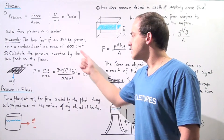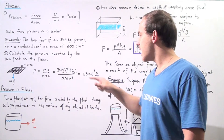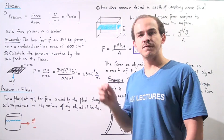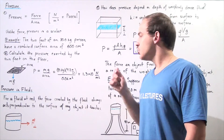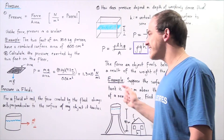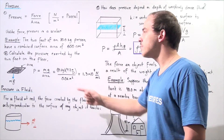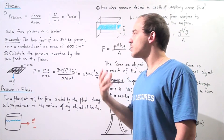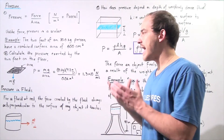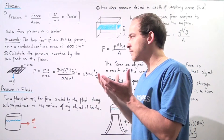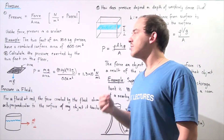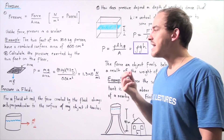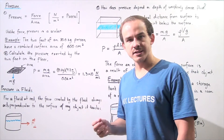We plug this into the calculator and we get 1.3 times 10 to the 4 newtons per meter squared — that is the pressure that the floor feels as a result of the surface area of the two feet and the gravitational force acting on those two feet.